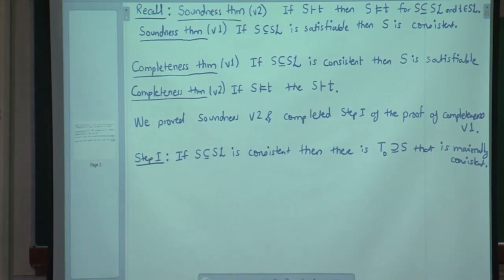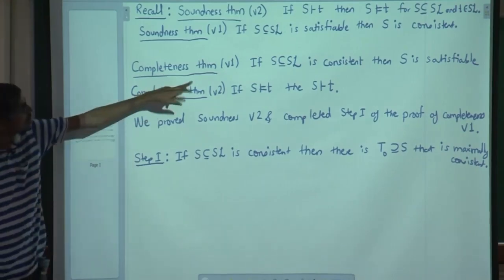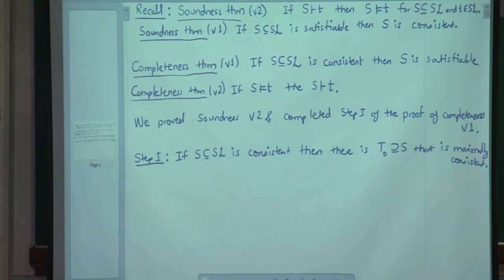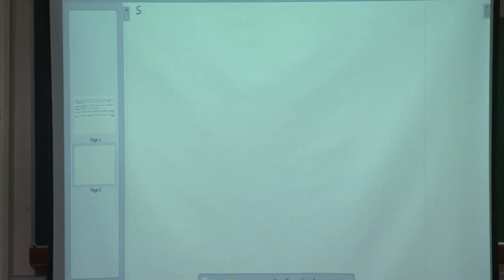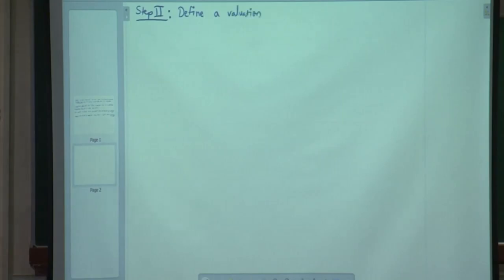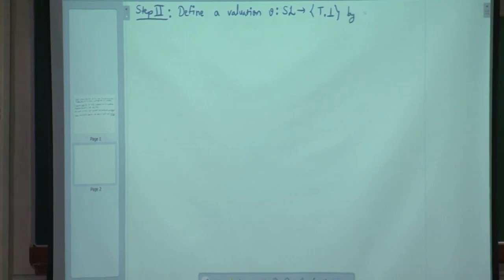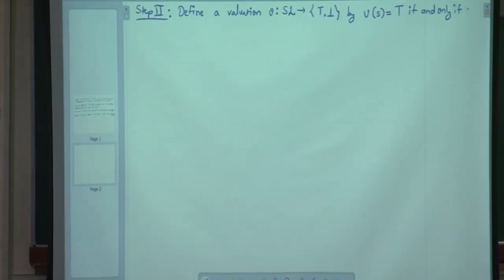Step 2 is the construction of a valuation. We need to show that S is satisfiable, meaning there is a valuation V which satisfies S. Step 2: define a valuation V from SL to {true, false} by V of a formula S is true if and only if S belongs to T0, where T0 is the maximally consistent extension obtained from step 1.